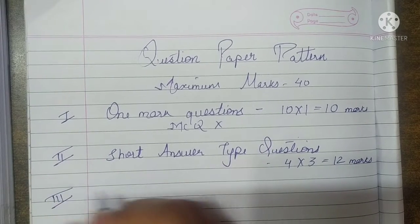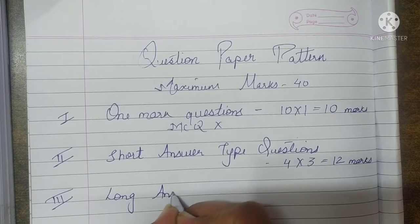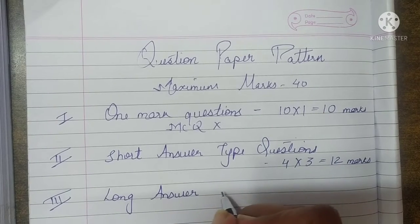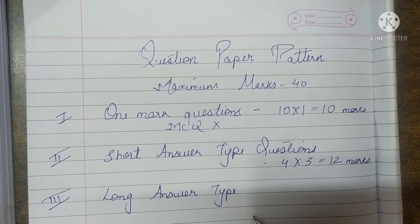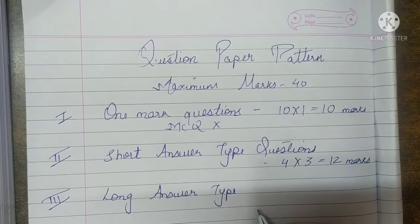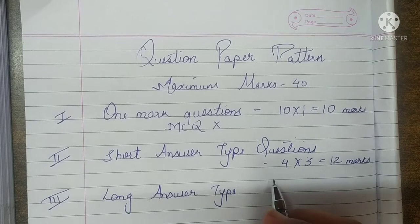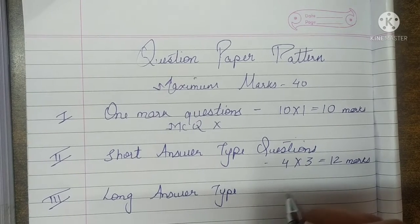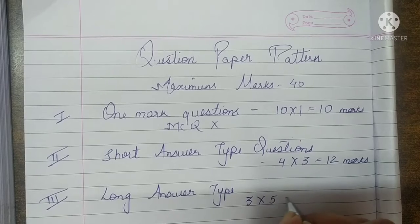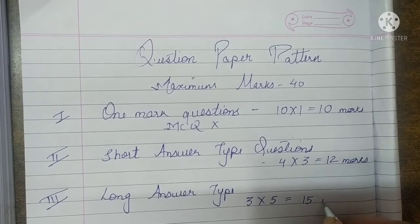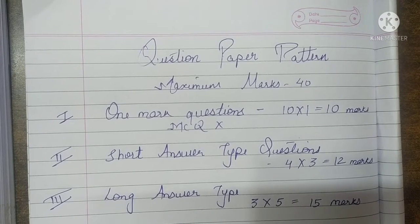The third section is about long answer type questions, as you were writing in your middle school also. Here, they give more preference to points. The marking scheme is: a 5 marks question will contain 5 points. You will have 3 questions of 5 marks each, so that will be 15 marks given to long answer type questions.